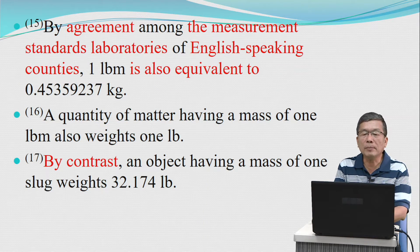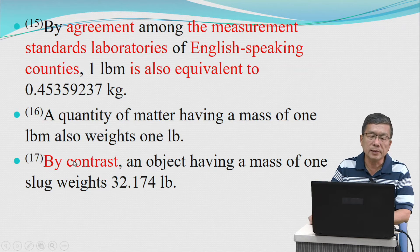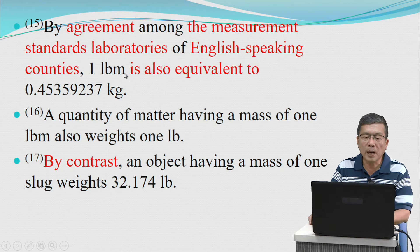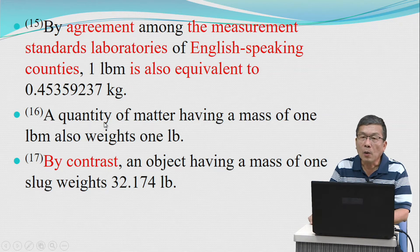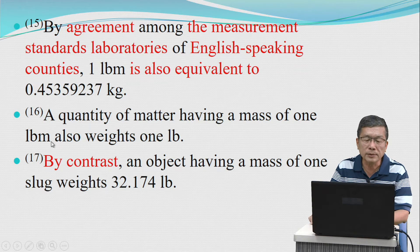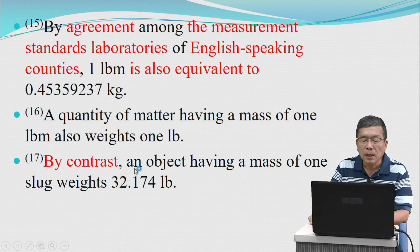By agreement among the measurement standard laboratories of English-speaking countries, one pound mass is equivalent to 0.45359237 kilograms. A quantity of matter having a mass of one pound mass also weighs one pound. By contrast, an object having a mass of one slug weighs 32.174 pounds.